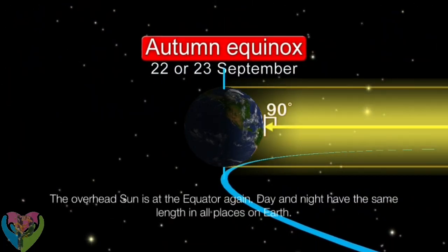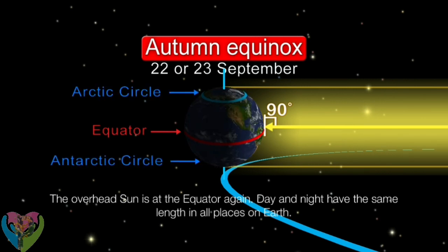The overhead Sun is once again at the equator. Day and night have the same length at all places on the Earth.